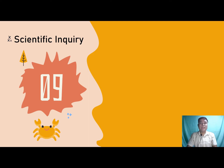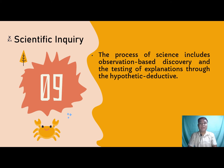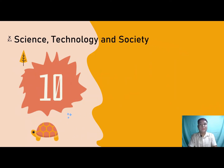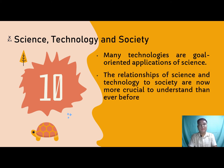Another unifying theme is scientific inquiry. The process of science includes observation-based discovery and the testing of explanations through the hypothetico-deductive method. We usually use the scientific method in conducting scientific inquiry or experiments, and scientific credibility depends on the reputability of observation and experiments. The last unifying theme is science, technology, and society. Many technologies are goal-oriented applications of science, and the relationships of science and technology to society are now more crucial to understand than ever before.